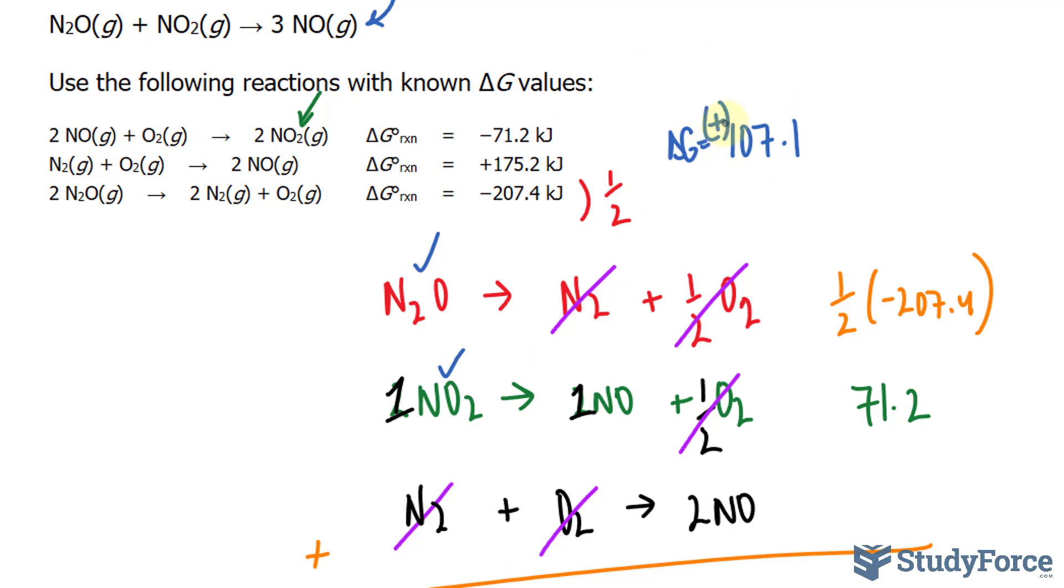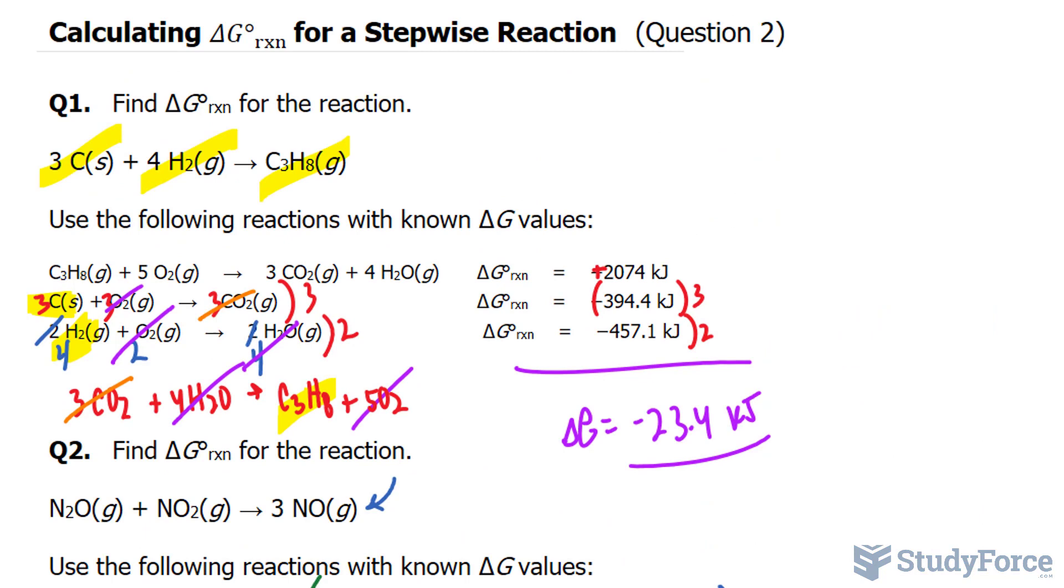Therefore, it is not spontaneous. 107.1 is the delta G for this reaction. And given that it's positive, it is not spontaneous. And there you have it. Another example on how to calculate delta G for a stepwise reaction.